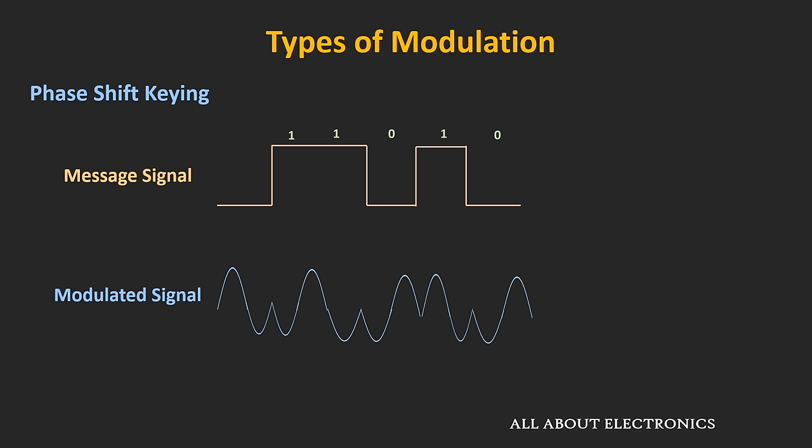In phase shift keying, the phase of the modulated signal is changed according to the digital bit stream. In binary phase shift keying, binary 1 and 0 are represented by different phases — they are 180 degrees apart from each other. When there is a transition from 1 to 0 or from 0 to 1 in the message signal, there is a 180-degree phase shift in the modulated signal.